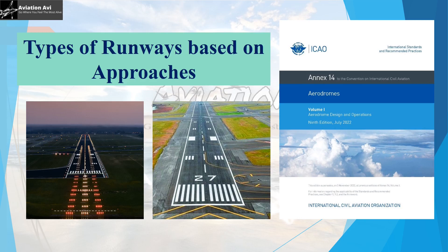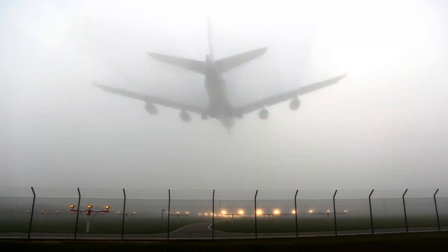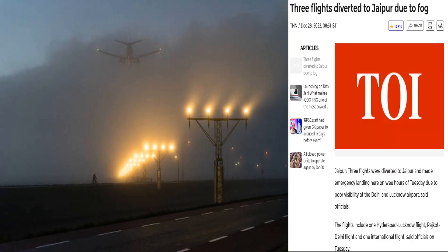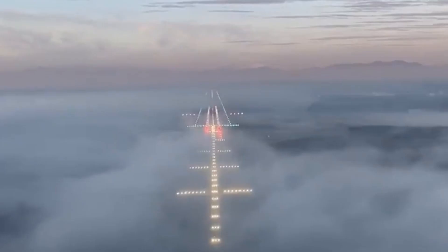Hello and welcome back to Aviation AVI. Today we will be learning about the types of runways based on the types of approaches carried on. You may have heard or read in the news that visibility had gone down to 100 meters or even 50 meters at some place and wondered if flights would still operate there. You may have also heard that flights were diverted due to poor visibility. So the question is: can flights only land when the runway is visible, or are there ways to land an aircraft even when there is poor visibility? With this video we will try answering all these questions.